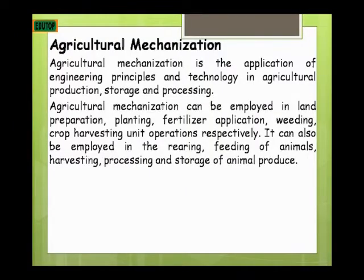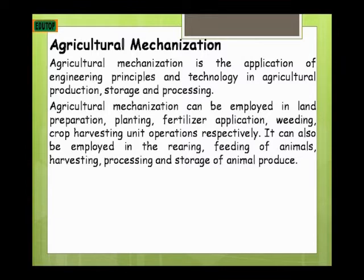The next topic is agricultural mechanization. Agricultural mechanization is the application of engineering principles and technology in agricultural production, storage, and processing. It can be employed in land preparation — involving clearing and tillage operations — as well as in planting, fertilizer application, weeding, and crop harvesting operations.